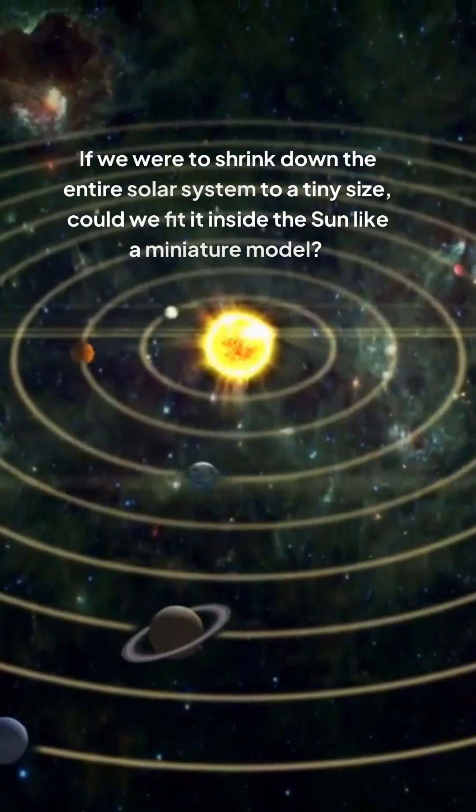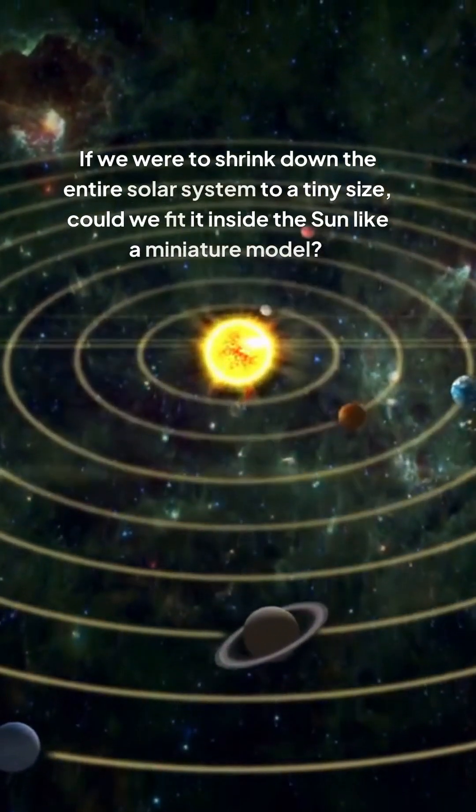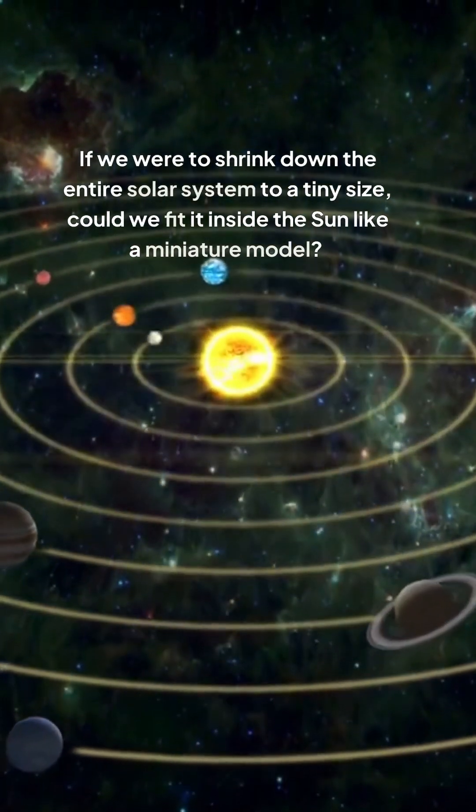The idea of our entire solar system fitting inside the sun is a pretty crazy concept, but it's interesting to think about. If we were to shrink down the entire solar system to a tiny size, could we fit it inside the sun like a miniature model?